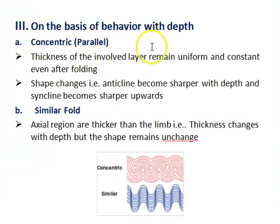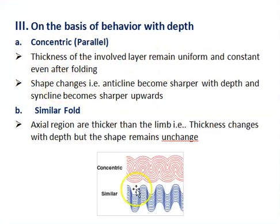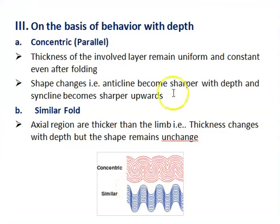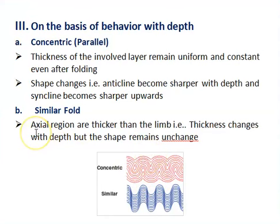The third classification is on the basis of behavior with depth. On this basis, folds are classified into concentric (or parallel) folds and similar folds. In concentric folds, the thickness of the involved layer remains uniform and constant even after folding, but the shape changes — the anticline becomes sharper with depth while the syncline becomes sharper upwards. In similar folds, the axial region is thicker than the limbs — that is, thickness changes with depth but the shape remains unchanged.